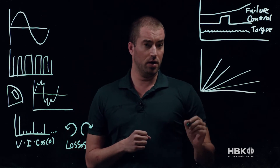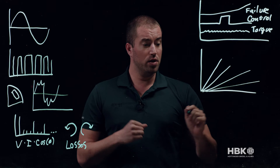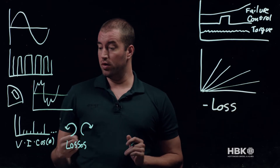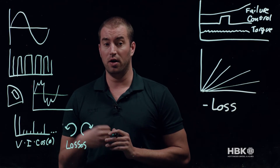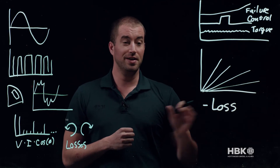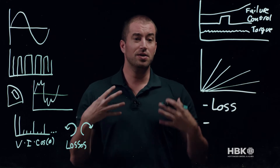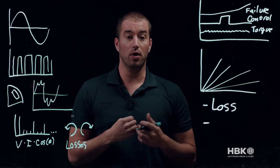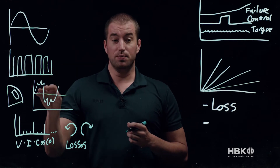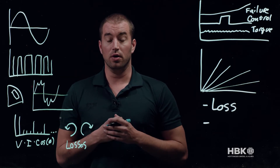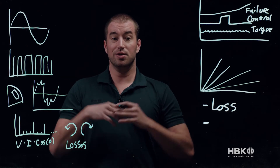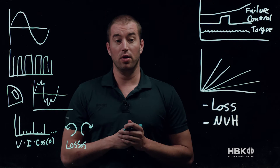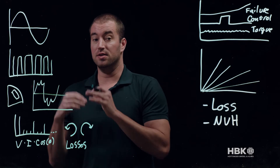By understanding, plotting, and graphing these harmonics, we can really start to understand where losses in our machine are going — using the voltage of a harmonic times the current of a harmonic times the phasing to identify those losses. We can also start to understand the source of noise and vibration in our motor. The inverter, back EMF, and currents are causing torque, and this torque is causing radial forces, so we can understand the sources of NVH in our motor by characterizing motor harmonics.